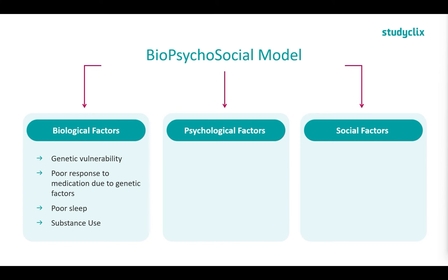Moving on to our psychological factors, we have rumination — repeatedly thinking or dwelling on negative thoughts. If you're doing that, it will contribute negatively to your mental health. We also have impaired reasoning and impaired memory. Thinking of people who have Alzheimer's or dementia, they have impaired reasoning and memory, and this can really negatively affect their mental health. If they can't remember what they've done or a conversation they've had, it can lead to very negative thoughts and affects their mental health.